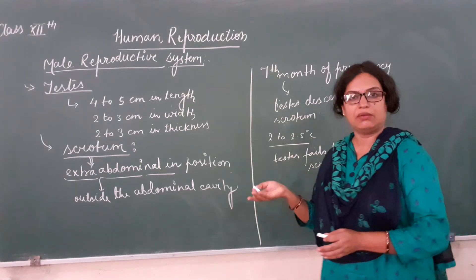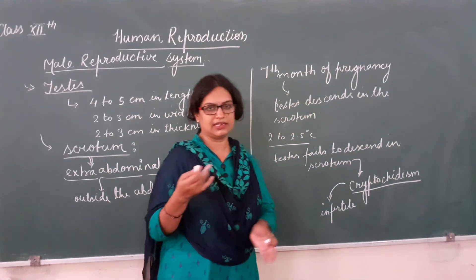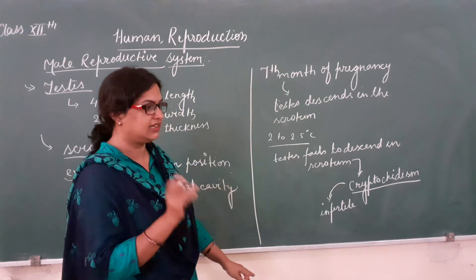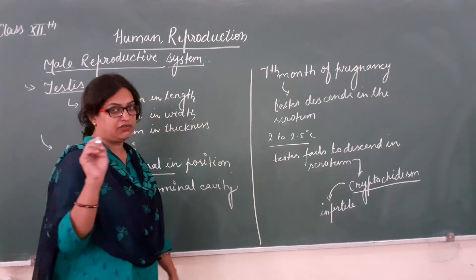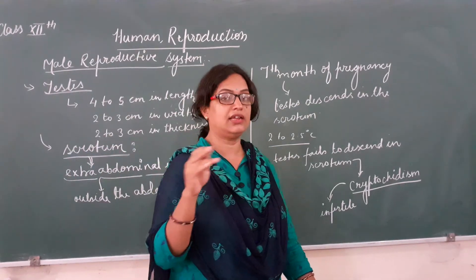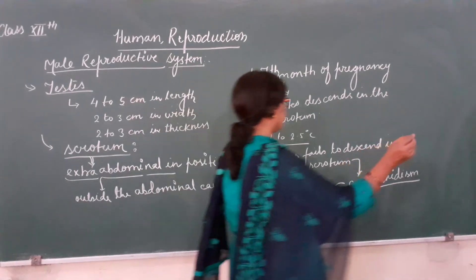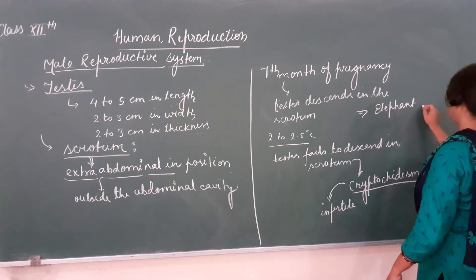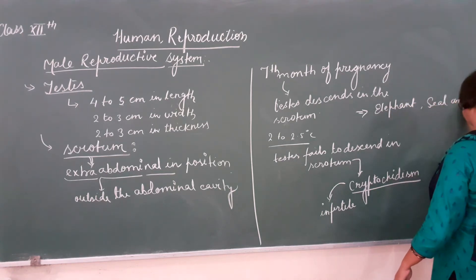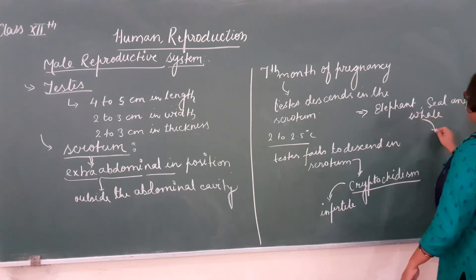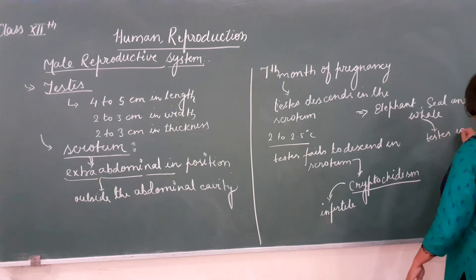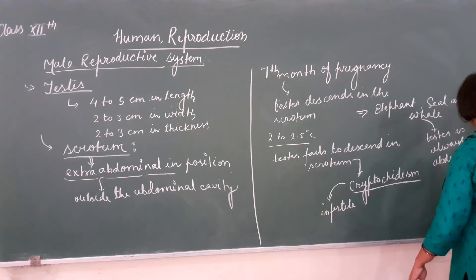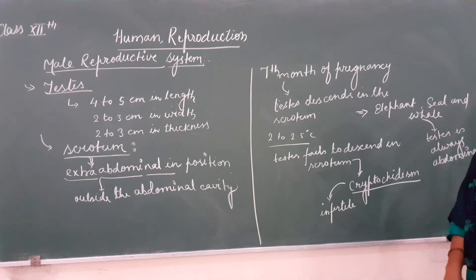Not all mammals have testes that descend into the scrotum. There are three mammals in which the testes always remain in the abdomen without any defect. These three mammals are the elephant, seal, and whale. In these mammals, the testes are always abdominal without any defect.